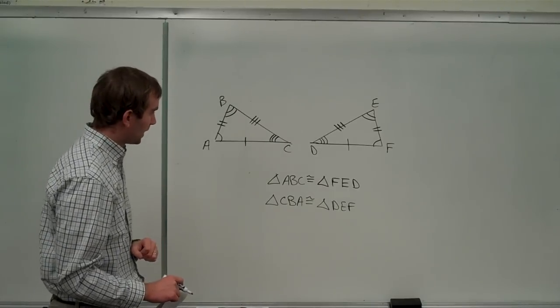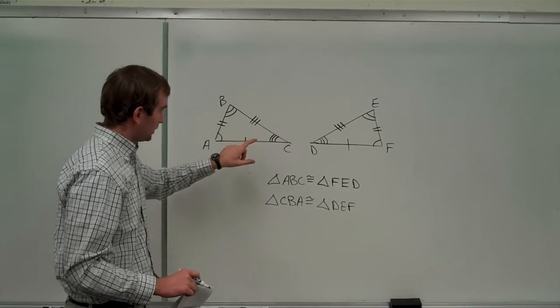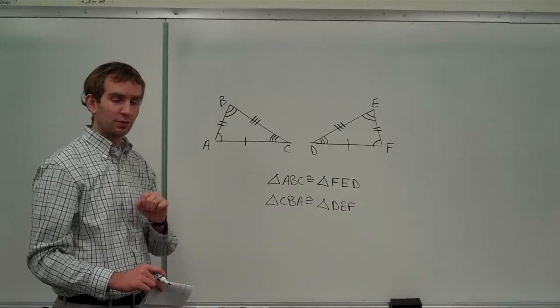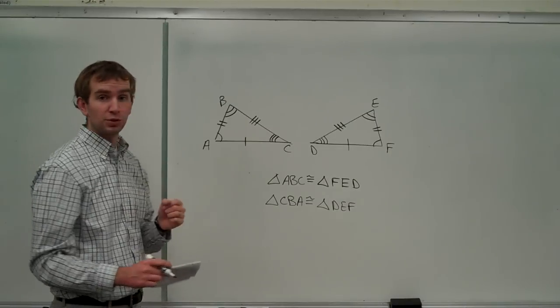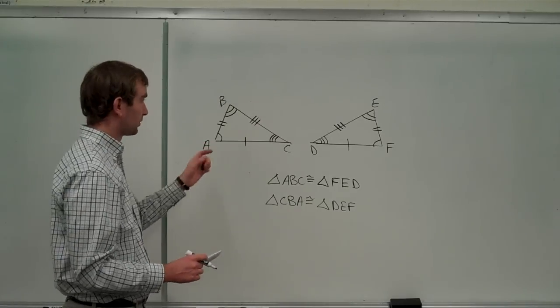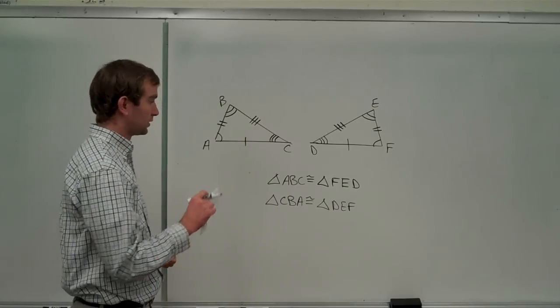Now, this is great. But to show these two triangles are congruent, you don't actually have to show all six things. What we're going to learn next is some shortcuts to where you have less information that defines the triangle and can show congruence that way. So stay tuned for that.